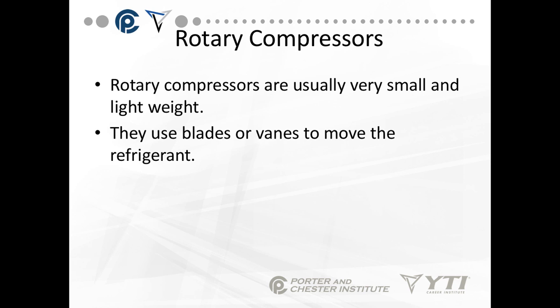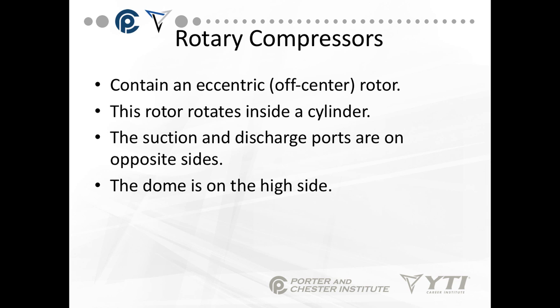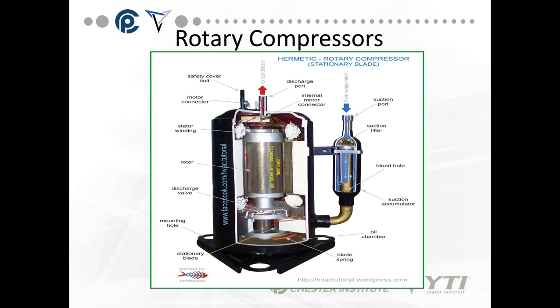Rotary compressors — we're going to start with these because they're the smallest. They're usually very small and lightweight. They use blades or vanes to move the refrigerant; it's not a piston-type action. They contain an eccentric, which is just off-center — the shaft is not in the center of the rotor so it moves side to side. The rotor rotates inside a cylinder, and the suction and discharge ports are on opposite sides.